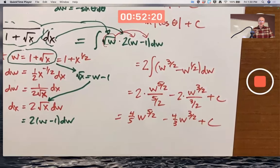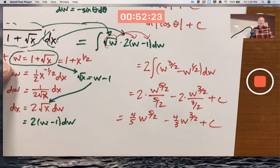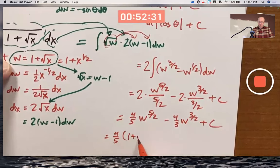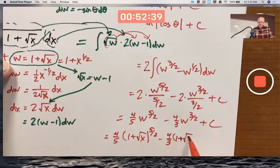Wait a minute, we're not done. Replace those w's with 1 plus square root of x. So you get 4 fifths times 1 plus square root of x to the 5 halves power minus 4 thirds times 1 plus square root of x to the 3 halves power plus c.